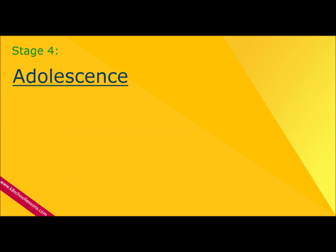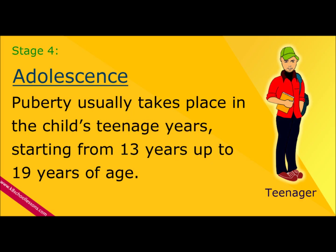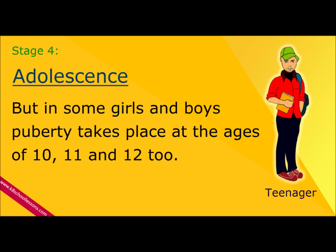Stage 4: Adolescence. This is the stage where a child grows into an adolescent through a period called puberty. Puberty usually takes place in a child's teenage years, starting from 13 years up to 19 years of age. Therefore, adolescents are also called teenagers. But in some girls and boys, puberty takes place at the ages of 10, 11, and 12 too.